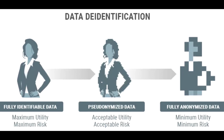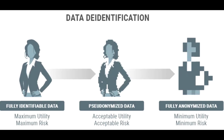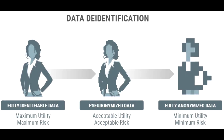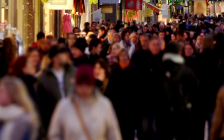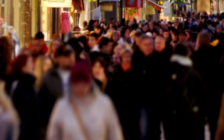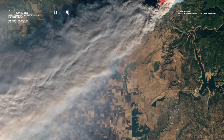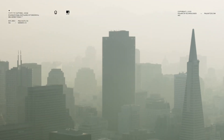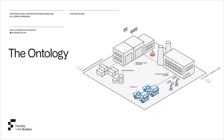Anonymization refers to the process of removing identifiable information from datasets so that the people described in the data cannot reasonably be re-identified. Anonymization is useful because it allows organizations to work with data derived from individuals without putting the privacy of those individuals at risk.